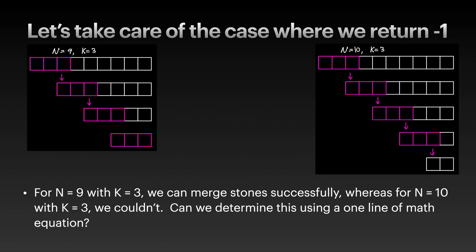Let's first handle the case where we have to return negative one — that's the case when you cannot merge stones successfully. In the first example, we have nine stones and can merge three at a time. For n equals nine and k equals three, you can merge successfully: merge three stones into one, repeat, and you are eventually left with three stones which you can merge down to one.